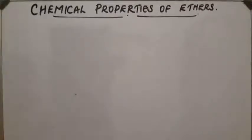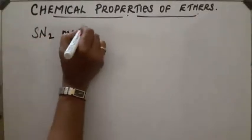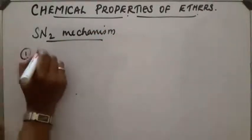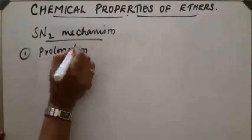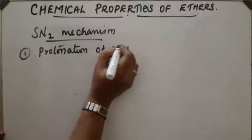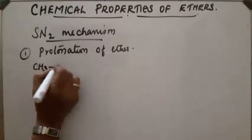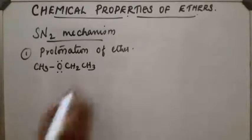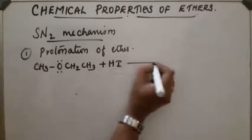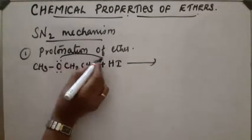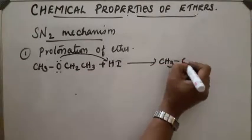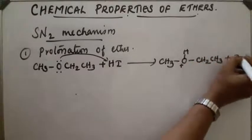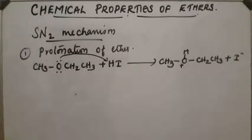The mechanism here is SN2. The first step is protonation of the ether. For example, CH3-O-CH2CH3 (methyl ethyl ether) on reaction with HI: protonation occurs on the oxygen, forming an oxonium ion plus I minus.